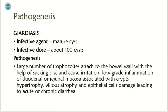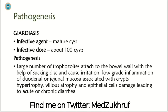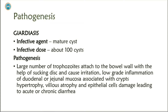Pathogenesis of Giardia: This is the disease caused by Giardia lamblia. The infective agent is the mature cyst, and an infective dose is about 100 cysts. Large numbers of trophozoites attach to the bowel wall with the help of sucking discs present on the ventral surface of Giardia lamblia, causing irritation and low-grade inflammation of the duodenal mucosa associated with crypt hypertrophy, villous atrophy, and epithelial cell damage, leading to acute or chronic diarrhea.